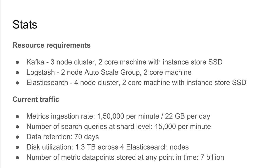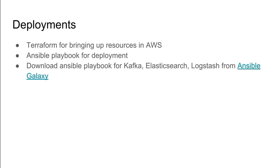Disk utilization is 1.3 TB across four Elasticsearch nodes, and at any point in time we store around 7 billion metric data points in our Elasticsearch cluster. For deployment, we use Terraform for managing AWS resources and Ansible Playbooks for deploying services. You can download Ansible Playbooks for Kafka, Elasticsearch, and Logstash from Ansible Galaxy.